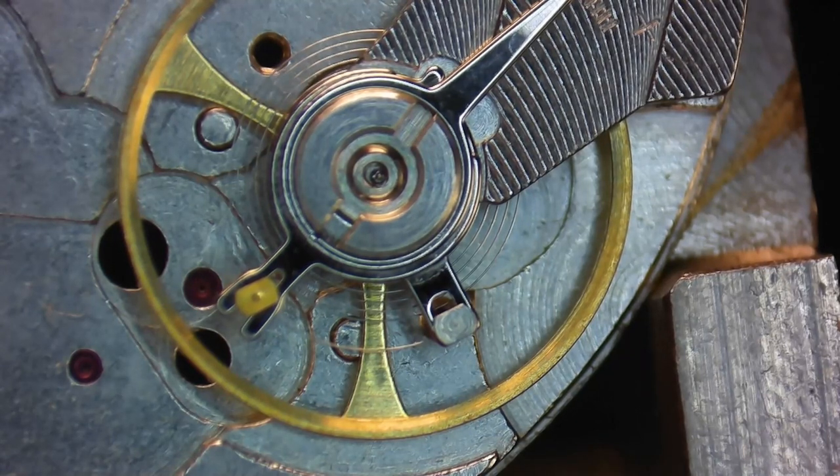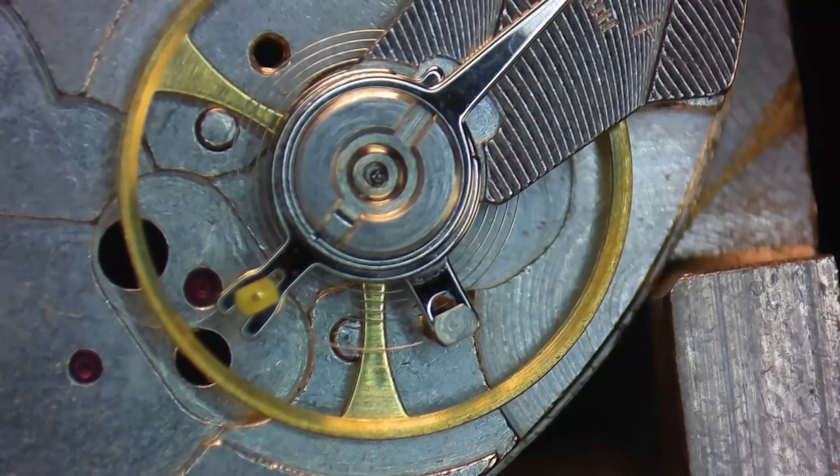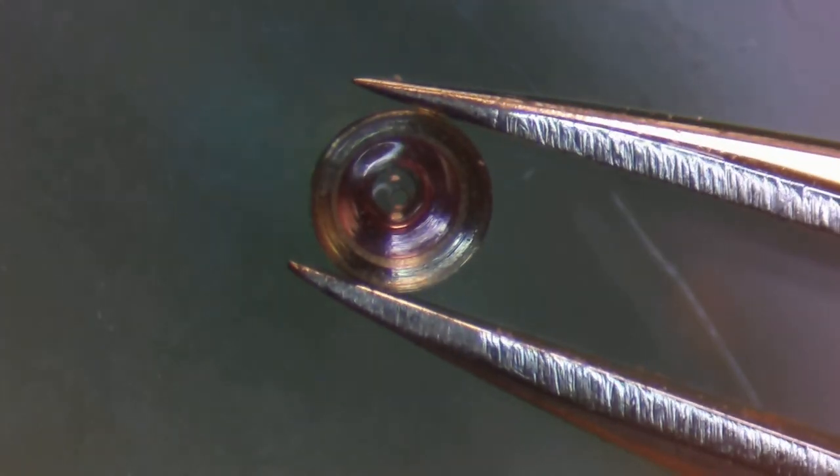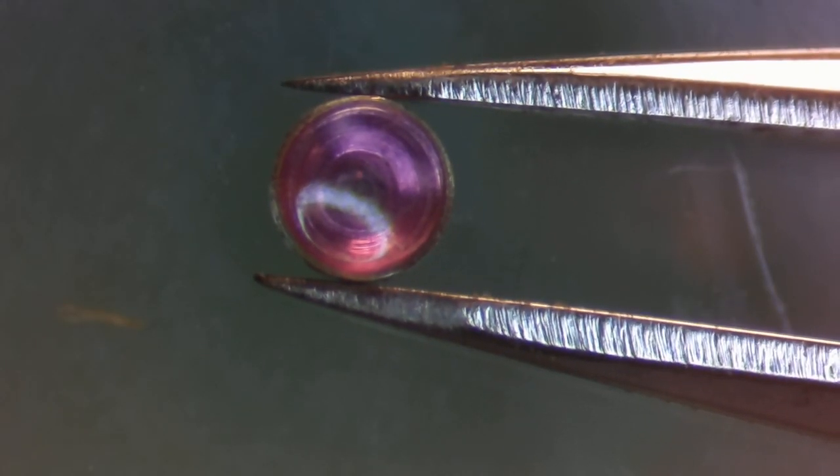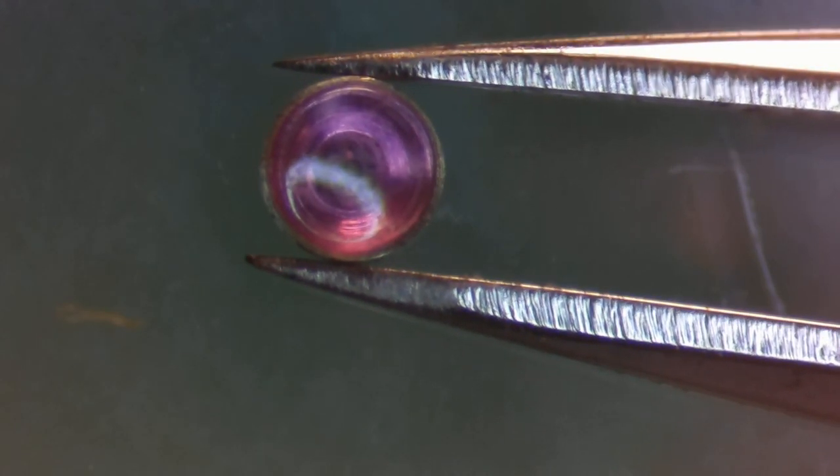Hopefully after this video that won't be a problem for you. The shock system is made up of two jewels, both of which are mounted in the chaton. The pivot hole jewel is mounted in the chaton, and then the end stone is inserted into the top and automatically held at the right distance away from the jewel hole to be able to retain the oil for the balance staff pivot.